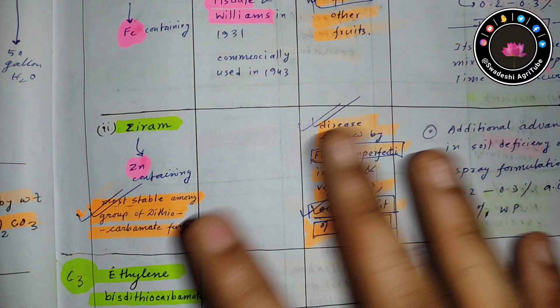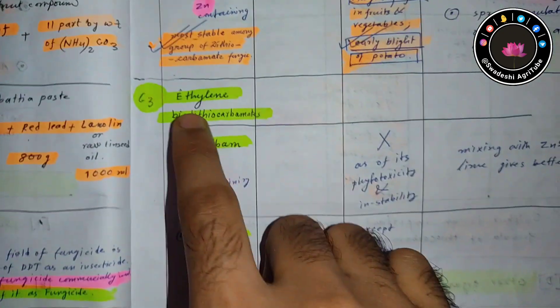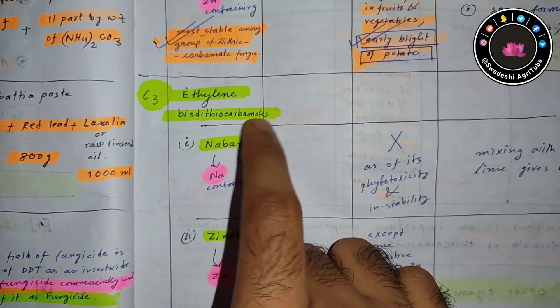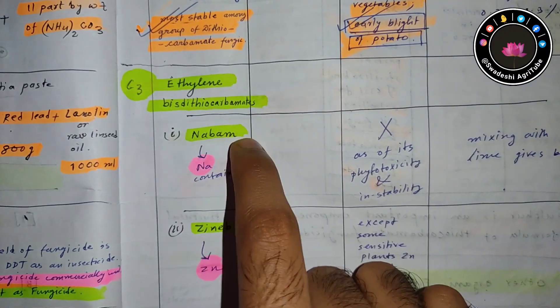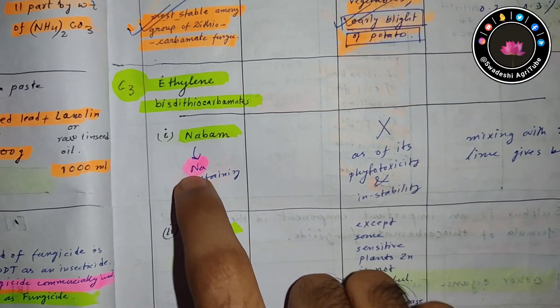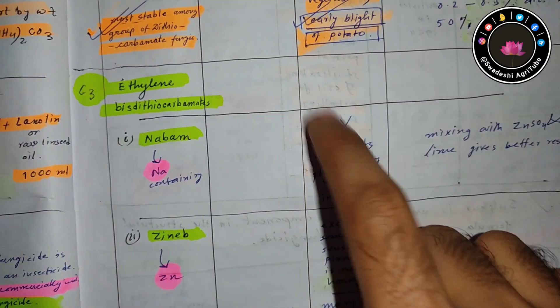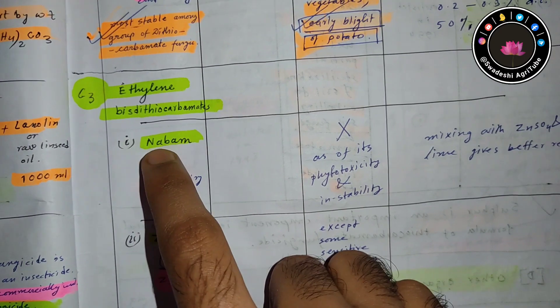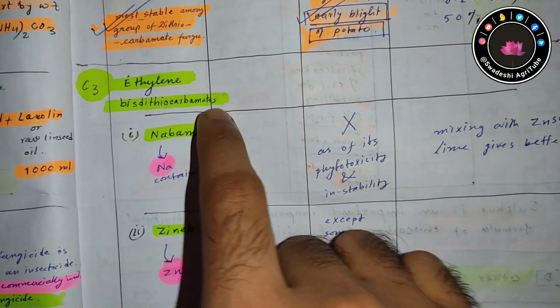Now talking about ethylene bisdiothiocarbamate. Under that there is nabam. Nabam contains sodium, but due to phytotoxicity it is now banned, so there is no use of nabam for agricultural purposes.